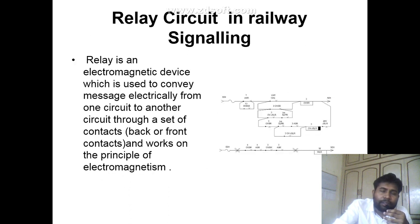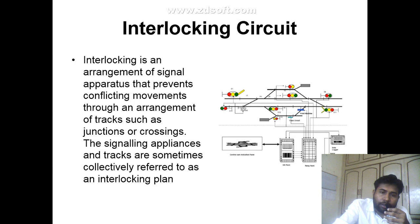Next is relay circuit. In railway signaling, a relay is an electromagnetic device used to convey messages electrically from one circuit to another through a set of contacts — back contact and front contact — working on the principle of electromagnetism.